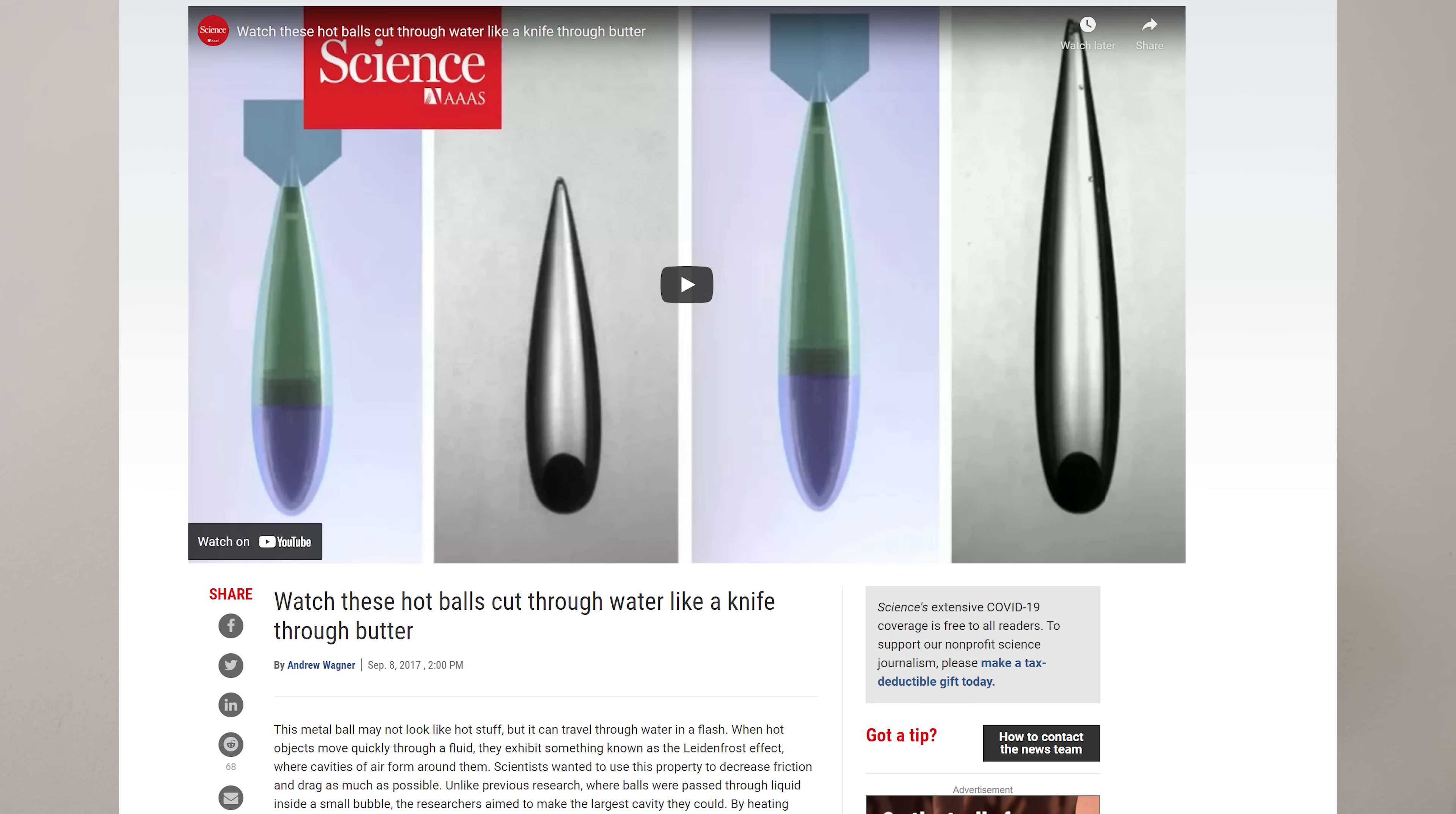They used the Leidenfrost effect and they used super hydrophobicity and dropped spheres through liquid to get this torpedo shape. And they actually measured the drag coefficient through the liquid. And what they found is the drag coefficient compared to that same shape of a solid shape was 10 times lower, a whole order of magnitude lower. The drag coefficient was only 0.02 or 0.03. So almost close to zero.